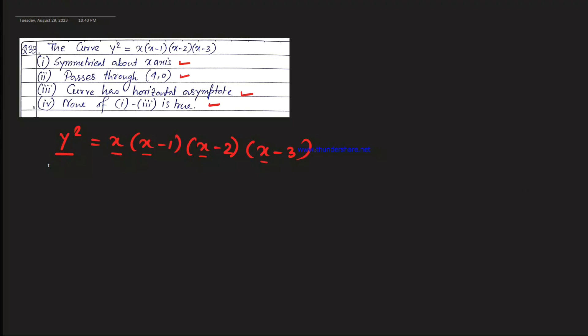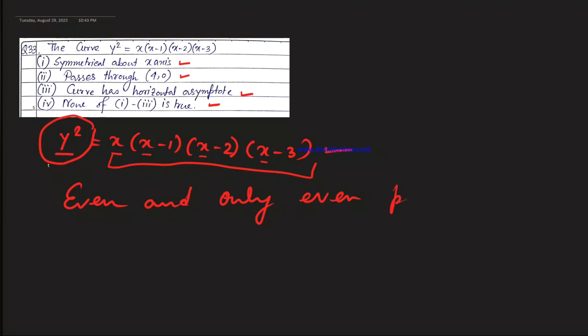Looking at the expression for y: only even powers of y are present — specifically y², with no odd powers of y. This means the curve is symmetrical about the x-axis. Option 1 is the right option.